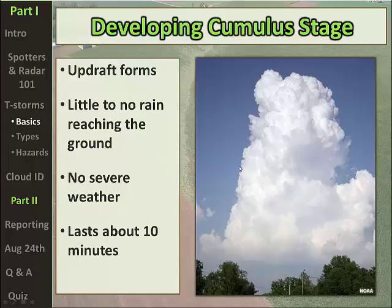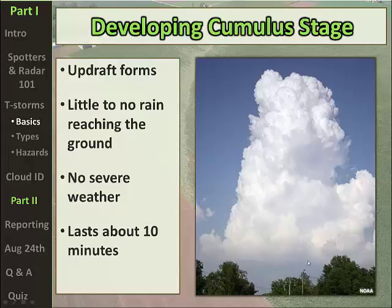In terms of cloud features during the developing cumulus stage, since the updraft is forming you'll see fairly sharp edges to the cloud tops, indicating a lot of liquid water content — which is favorable for thunderstorm development. Looking at the base of the cloud, you can see no evidence of any rainfall in this initial stage.